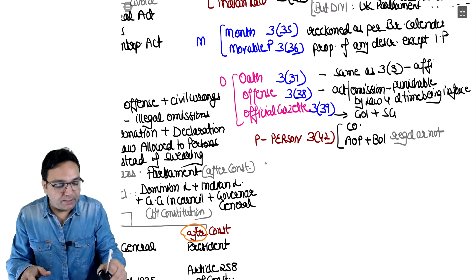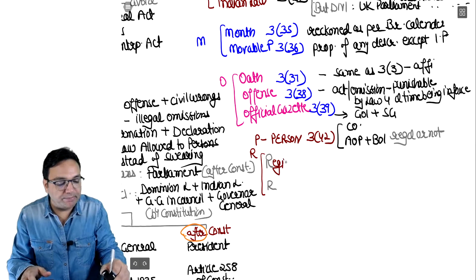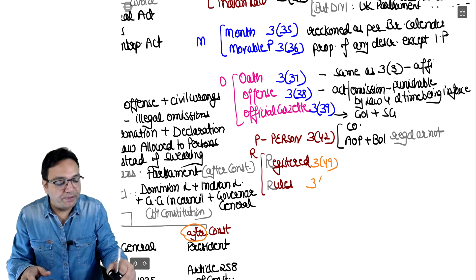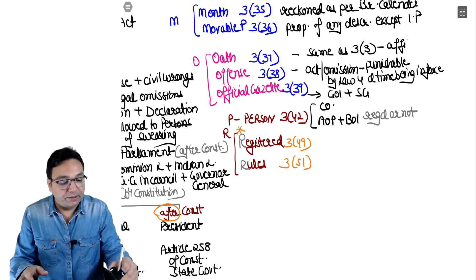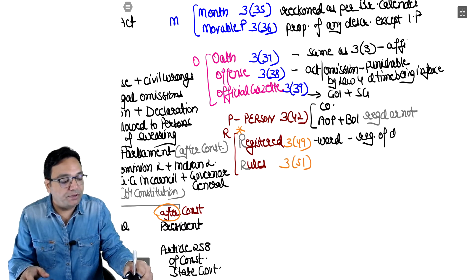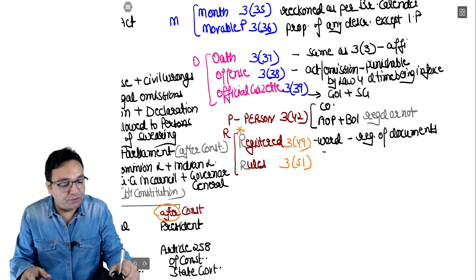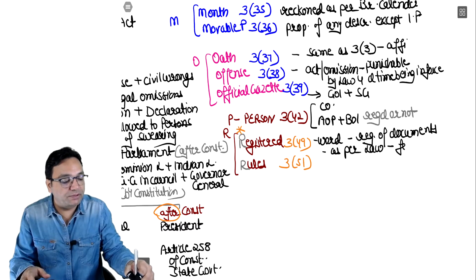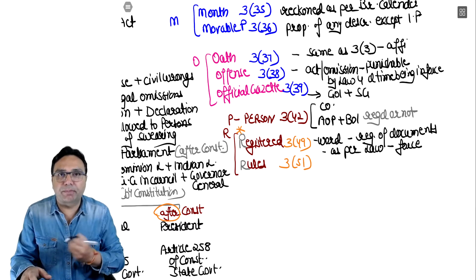The registered definition is good for MCQ type questions. 'Registered' means registration of documents - as per the law in force - for which law says you must register it: date of birth, death, marriage certificate, property purchase registry. For 'rules', means and includes: rules are made by an authority to whom the power is conferred. Under includes - any regulation made as a rule shall also be treated as a rule.